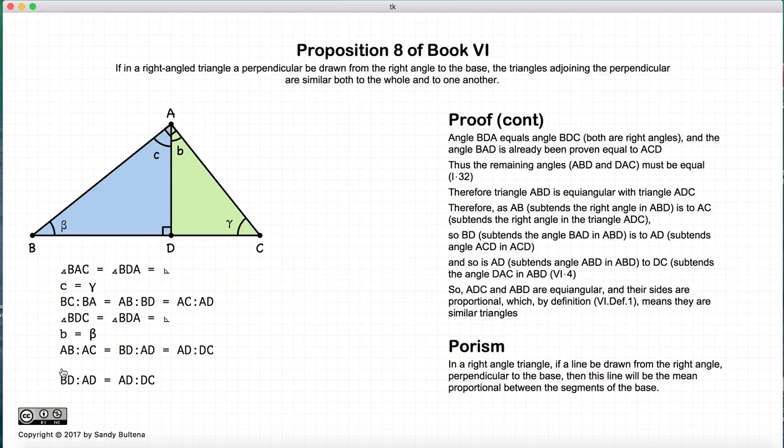And what does it mean to be a mean proportional? It means that BD to AD is equal to AD to DC, AD being repeated twice. That is the definition of mean proportional. This porism is used in a proposition further along. So we just needed to state that this was a consequence of the original proposition.